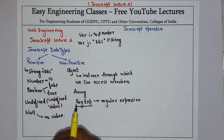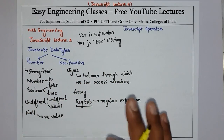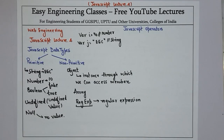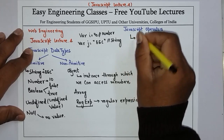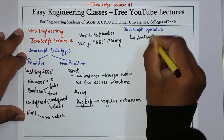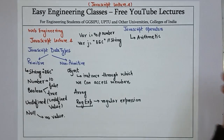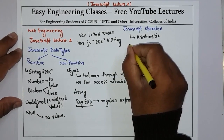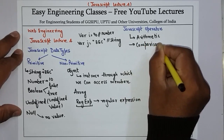You may already be familiar with primitive and non-primitive data types from other languages. Now, next we are going to discuss JavaScript operators. Like any other language, JavaScript also supports basic operators like arithmetic — which includes addition, subtraction, multiplication, division, modulus, and other operators. Then we have comparison operators.